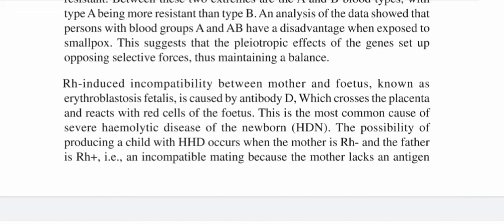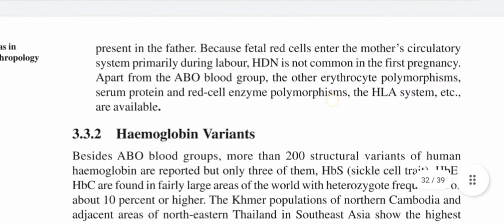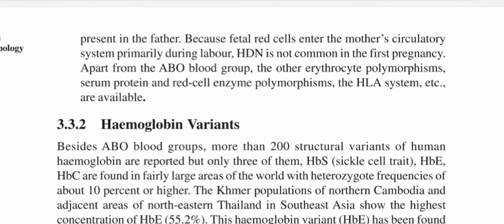The possibility of producing a child with HDN occurs when the mother is Rh-negative and the father is Rh-positive — an incompatible mating because the mother lacks an antigen present in the father. Because fetal red cells enter the mother's circulatory system primarily during labor, HDN is not common in the first pregnancy. Apart from the ABO blood group, other erythrocyte polymorphisms, serum protein and red cell enzyme polymorphisms, and the HLA system are also available for study. Thank you very much.